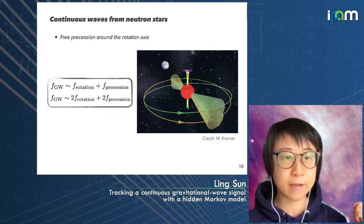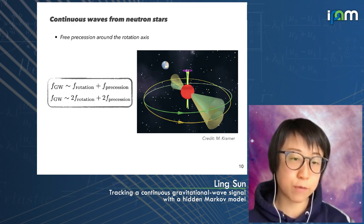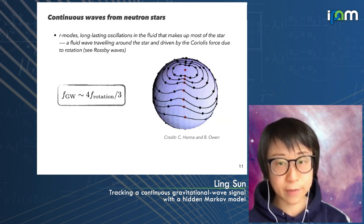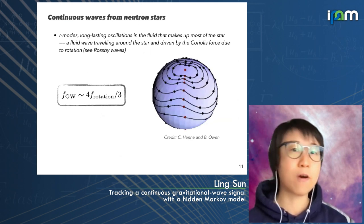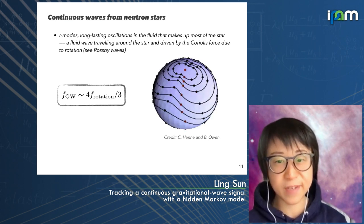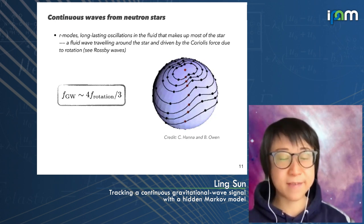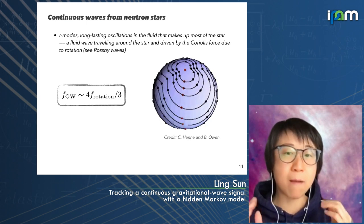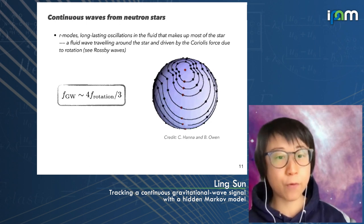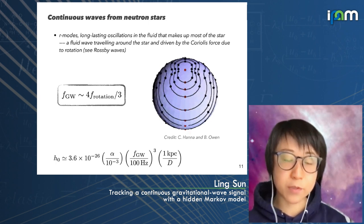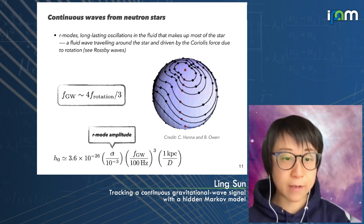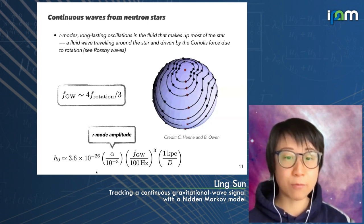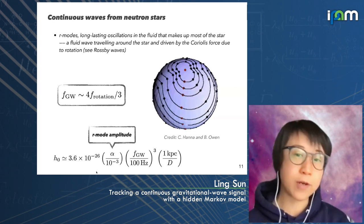If the neutron star is in free precession, there will be additional features — the emission frequency would be roughly once and twice the spin frequency. There are also other mechanisms like R-modes, which are long-lasting oscillation modes in the fluid interior of a neutron star. The waves generated by this mechanism are around four-thirds of the spin frequency, and the strain amplitude can be estimated similarly, with alpha representing R-mode amplitude. It's still on the order of 10 to the minus 26, so we still need to integrate data over a long time.